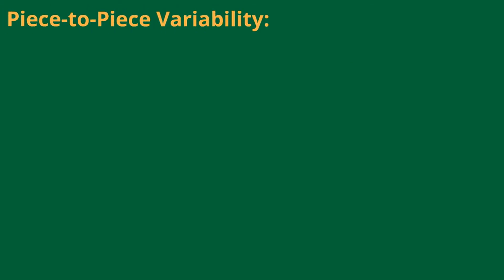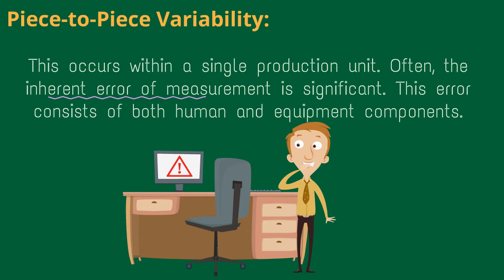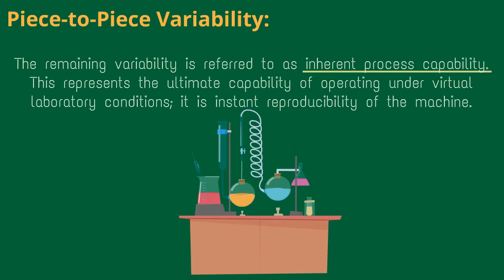Piece-to-piece variability occurs within a single production unit. Often, the inherent error of measurement is significant. This error consists of both human and equipment components. The remaining variability is referred to as Inherent Process Capability, which represents the ultimate capability of operating under virtual laboratory conditions — it is the instant reproducibility of the machine.